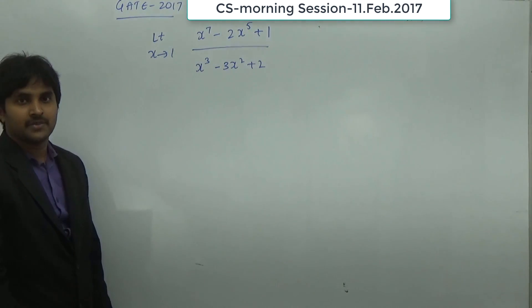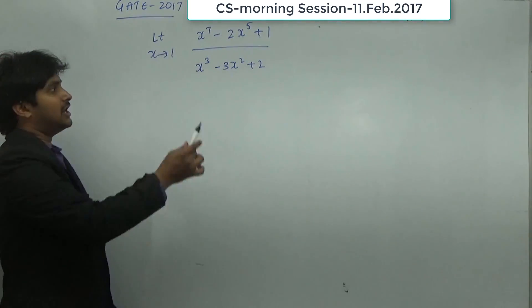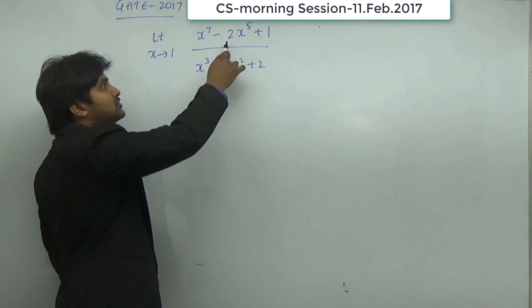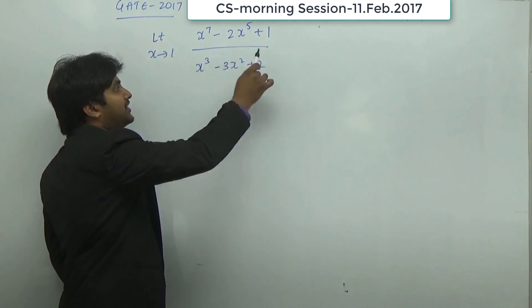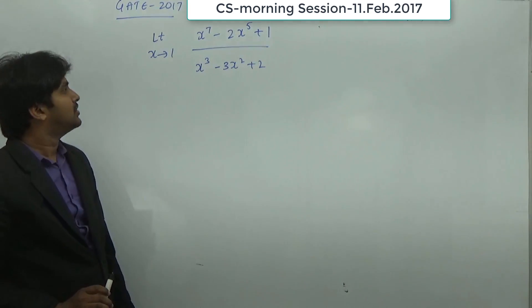This question is a very simple question from mathematics from the topic of calculus. It's a simple limits problem: limit x tends to 1, x^7 minus 2x^5 plus 1 divided by x^3 minus 3x^2 plus 2. We have to solve this one and get the answer.